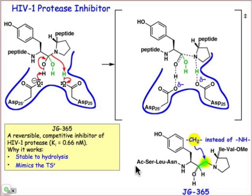That's one thing it has going for it, and also it's got the basic mimicking of the tetrahedral geometry—the tetrahedral geometry that's found in the transition state structure. And so JG365 is effective because it's stable to hydrolysis and it has the geometry of that transition state structure. So if you do a superposition,